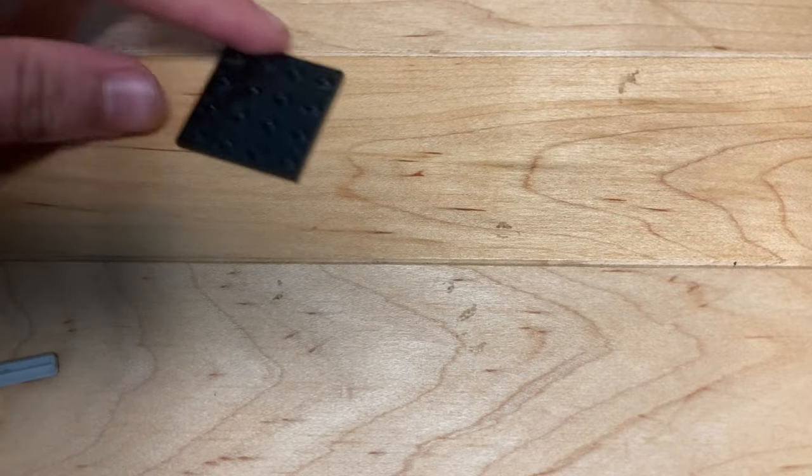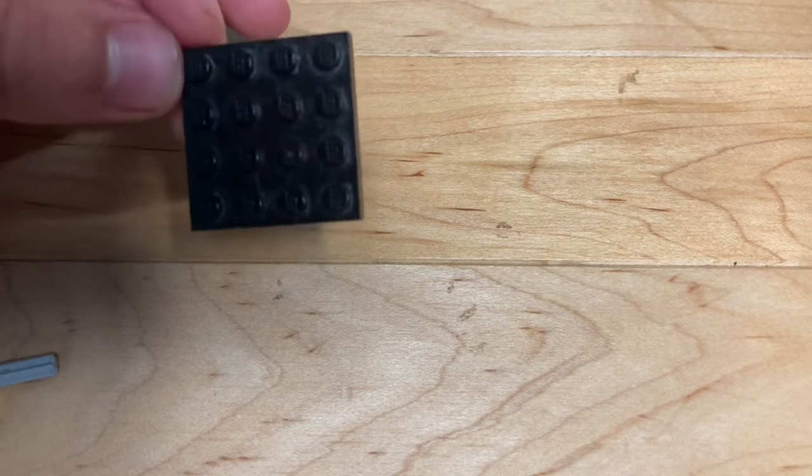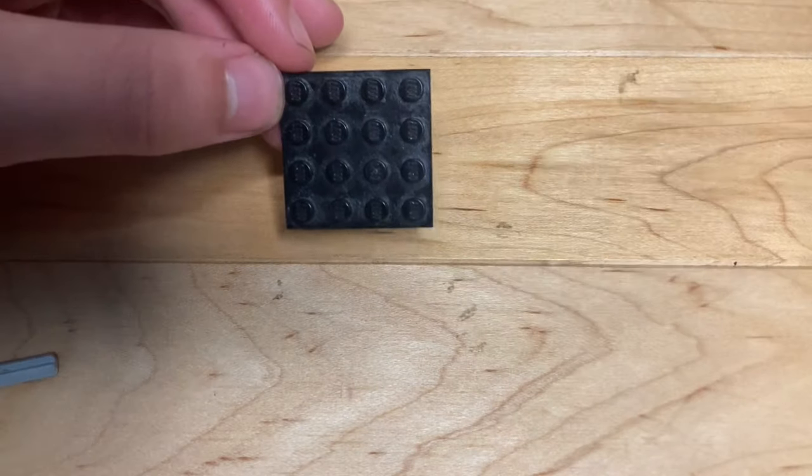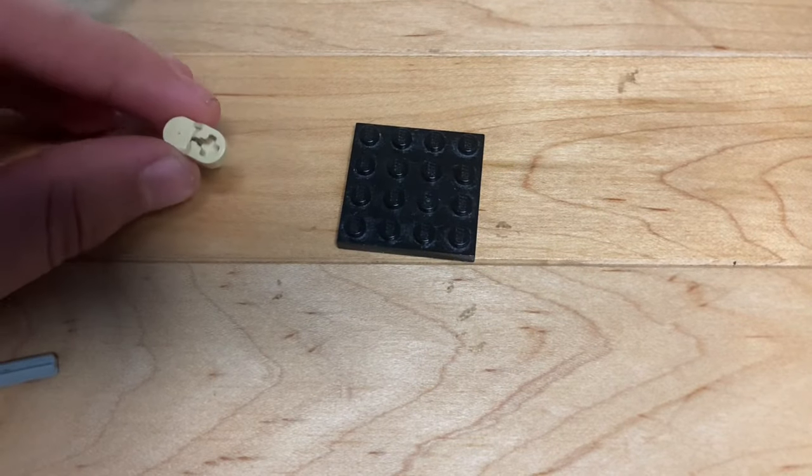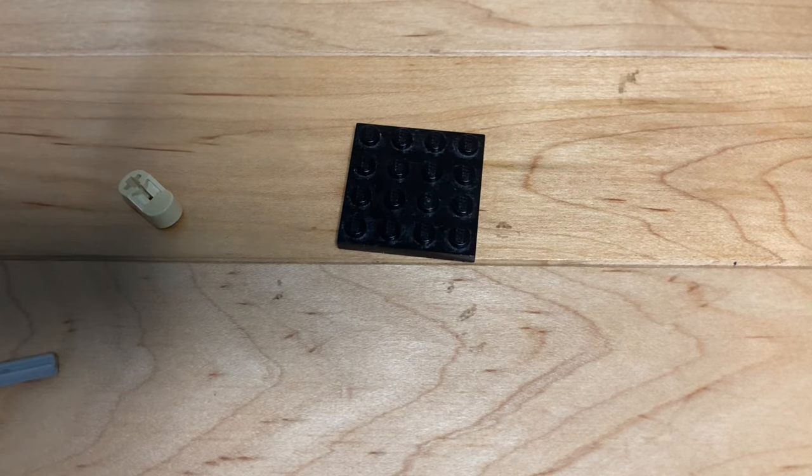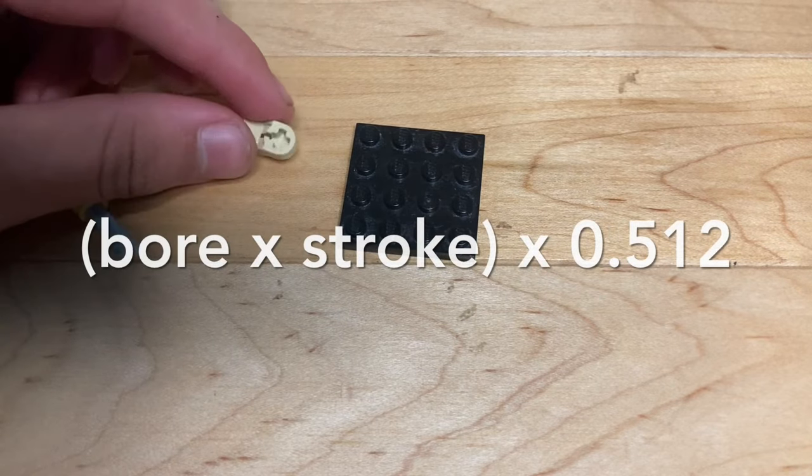But yeah, so that's the first part. The second part to understand is the surface area of the piston. Basically this piston is a 4x4 piston, 16 total studs. You're going to take this number times this number, so 2 times 16, and we get 32 cubic studs. So we need to multiply 32 by 0.512, and we get the total cubic centimeters of the engine, which in this case is around 16 and a half.